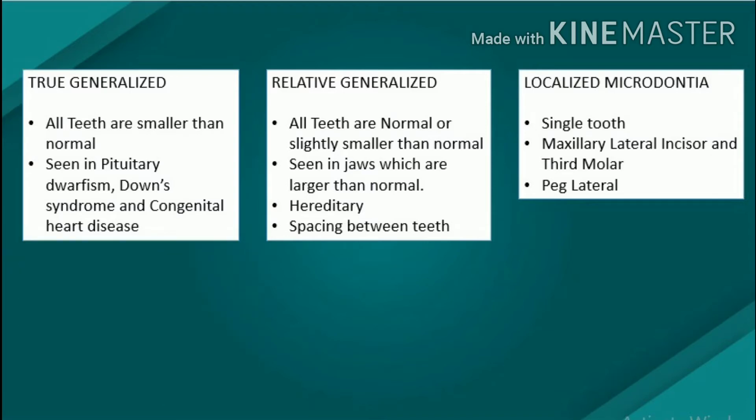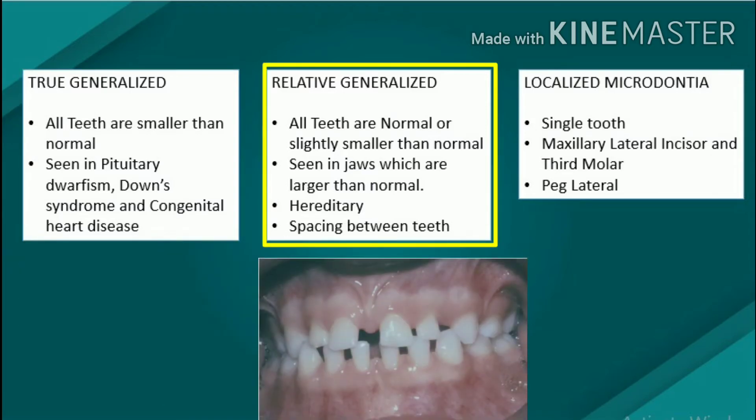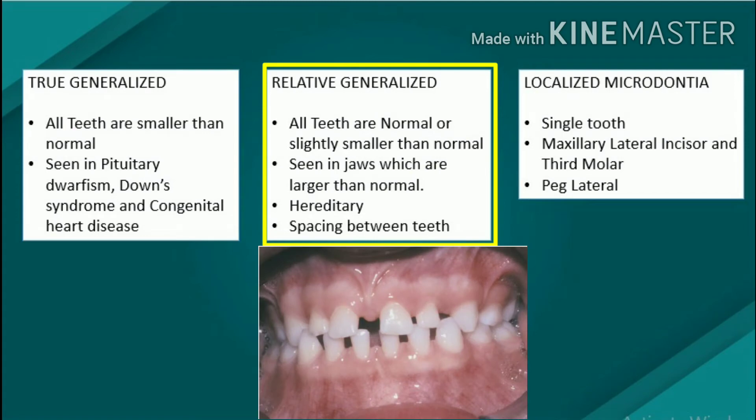Relative generalized microdontia: normal or slightly smaller than normal teeth are present in jaws that are somewhat larger than normal. It is hereditary and often exhibits spacing between the teeth.